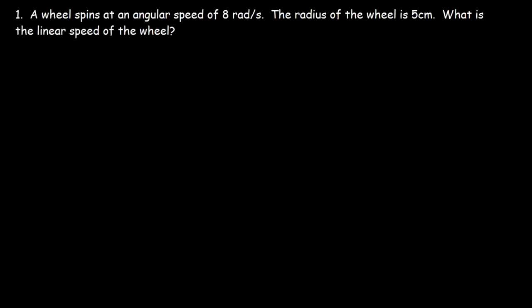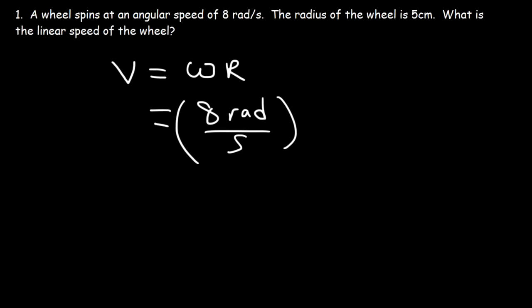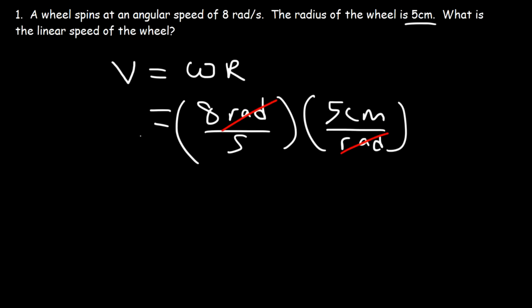Example 1: A wheel spins at an angular speed of 8 radians per second, and the radius is 5 centimeters. What is the linear speed? Using v = omega × r, omega is 8 radians per second, and the radius is 5 centimeters per radian. The unit radians cancels, giving v in centimeters per second. 8 times 5 is 40, so the linear speed is 40 centimeters per second.